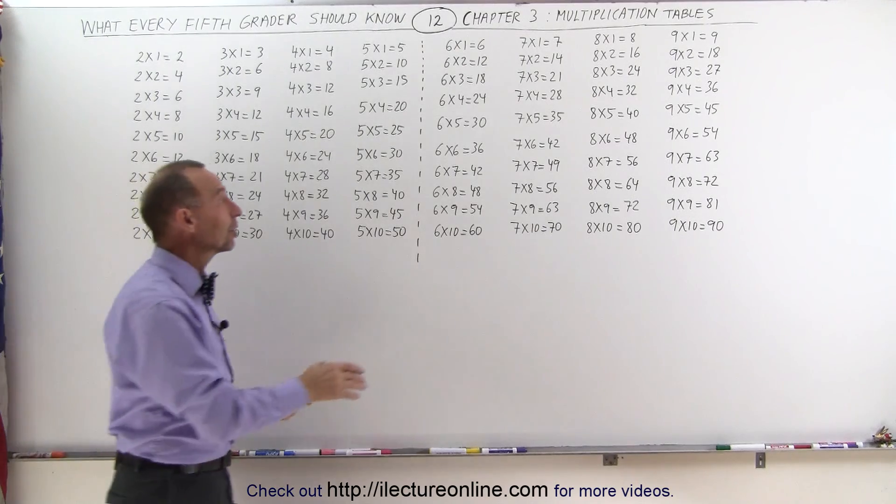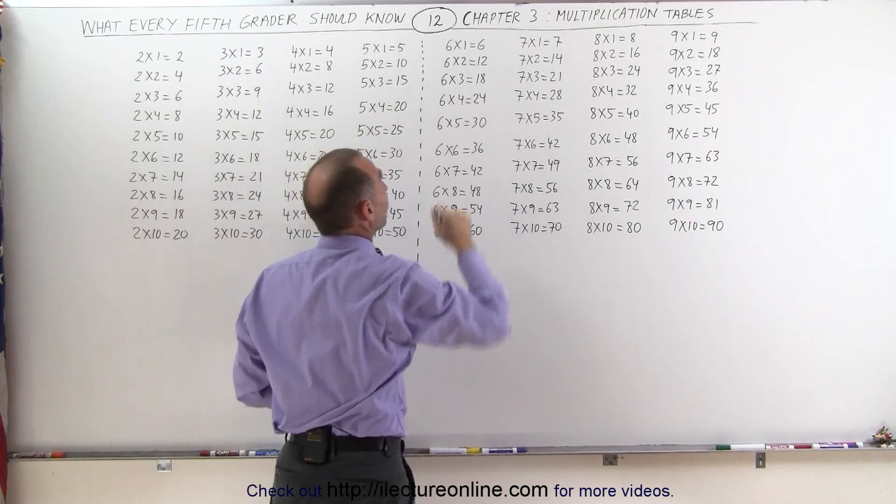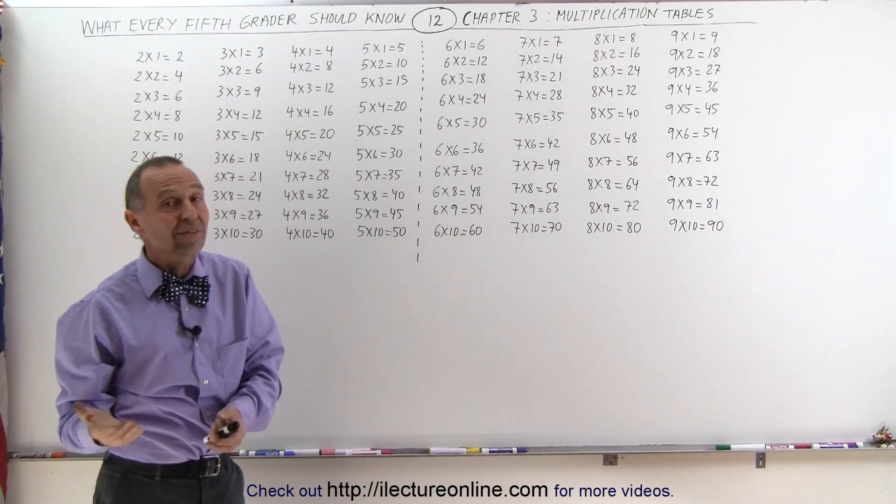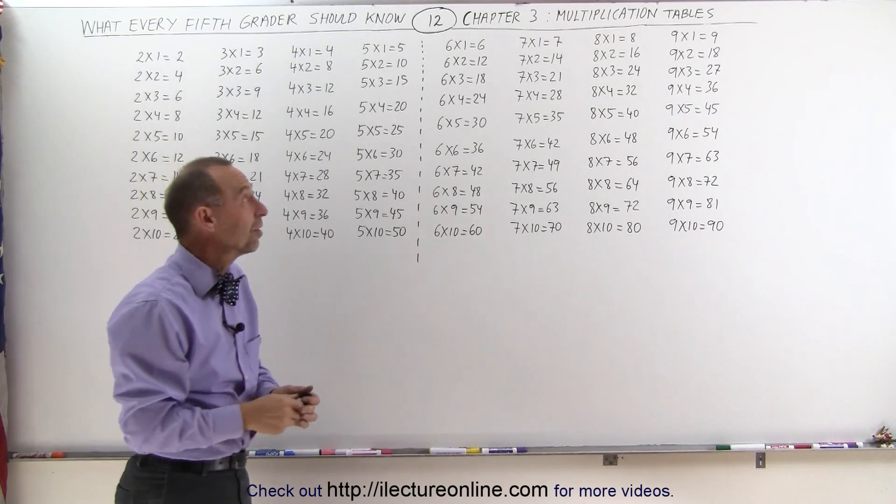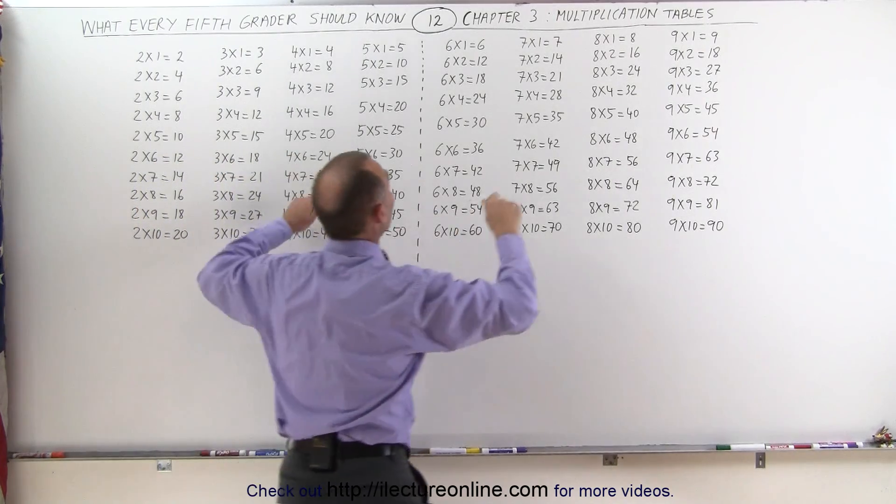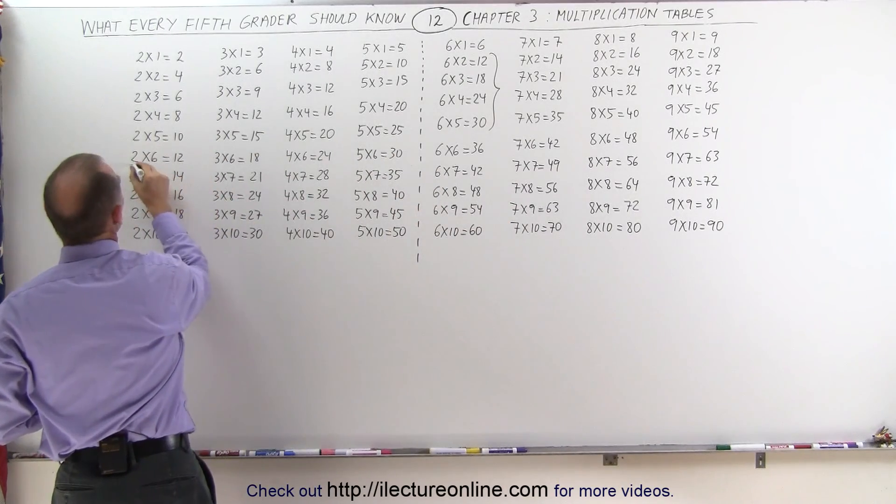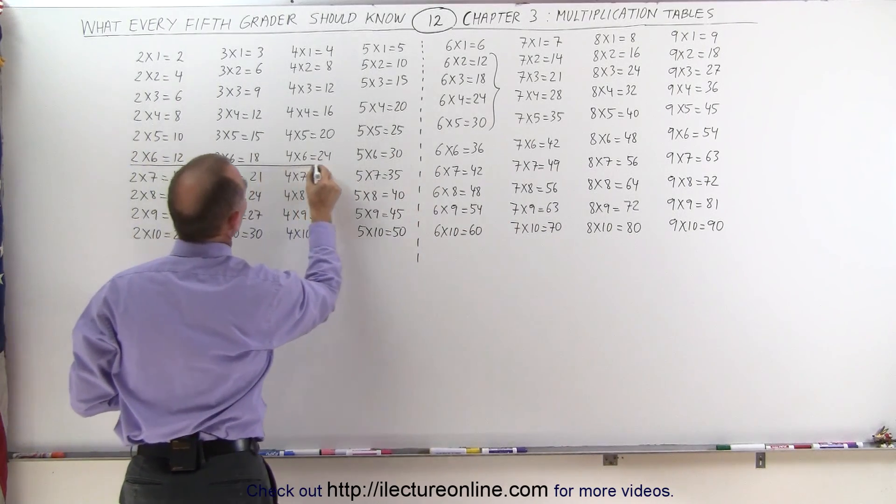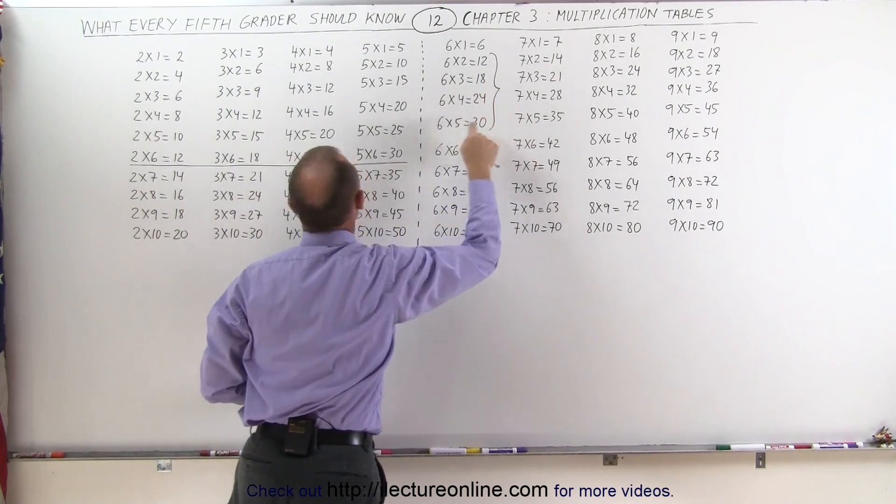But again, notice that if you look at multiplying times 6, 6 times 1, 6 times 2, 6 times 3, well, 6 times 2 is the same as 2 times 6, and 6 times 3 is the same as 3 times 6, which means that if you look at these numbers right here, the answers right here, those are the same answers as when you multiply 2 times 6, 3 times 6, 4 times 6, and 5 times 6. We have 12, 18, 24, and 30.